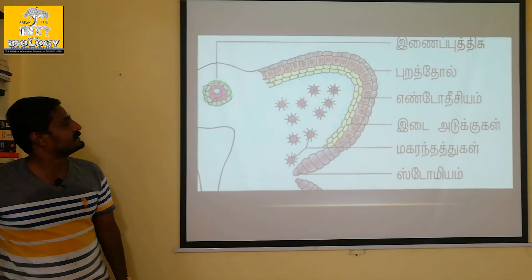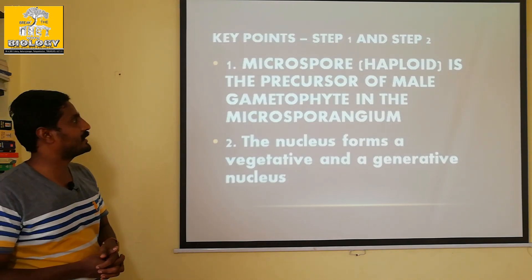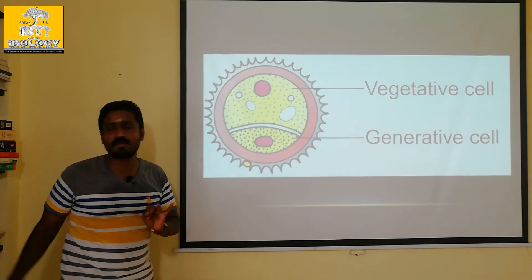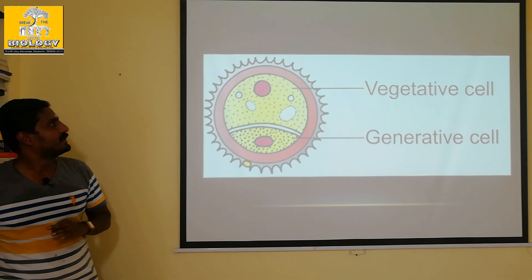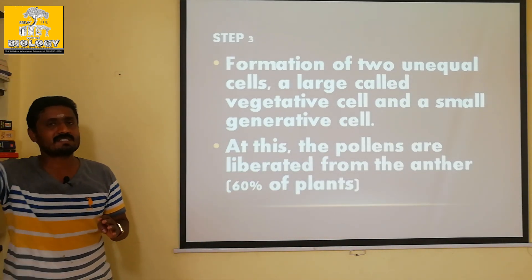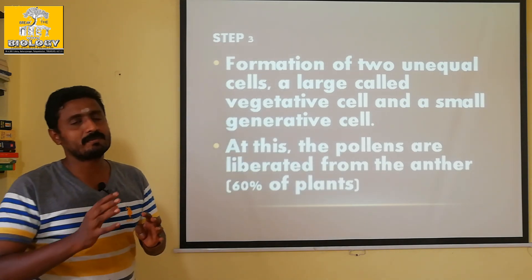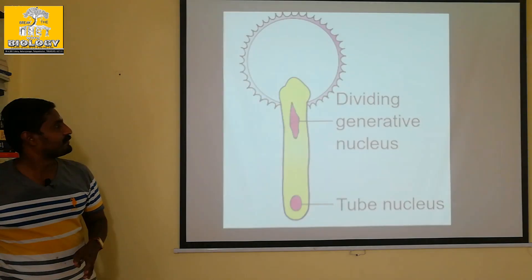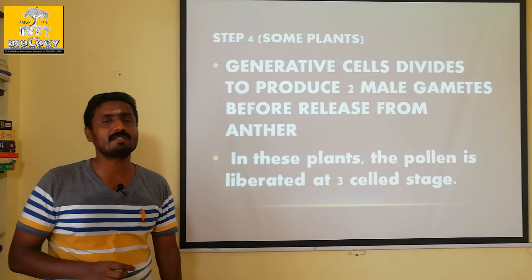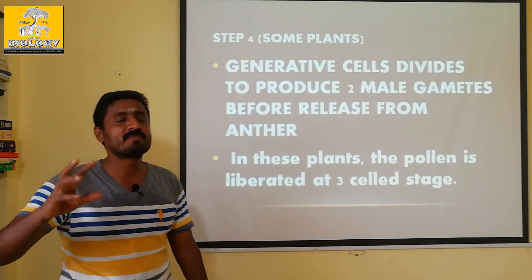Microspore region: first step — they are the precursors. Second step — two nuclei form: vegetative nucleus and generative nucleus. Third step — vegetative cell and generative cell. Fourth step — anther release. One vegetative cell, two male gametes, three-cell stage. The release of 40% of the plant means 60% of the plant.